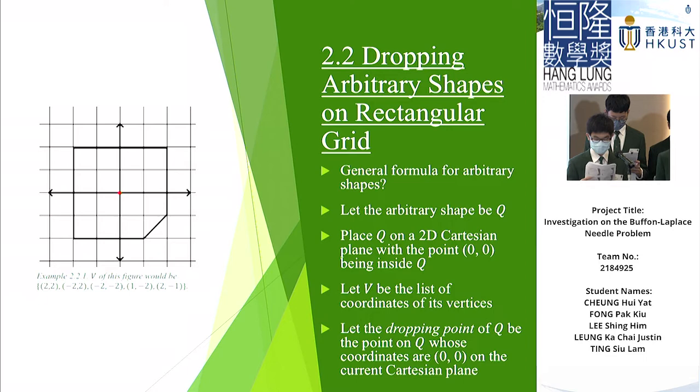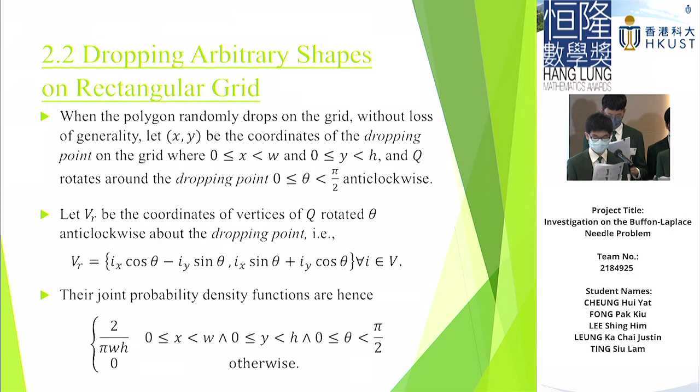Then, let the arbitrary shape be Q. When Q is dropped randomly onto the grid without loss of generality, let x, y be the coordinates of the dropping point on the grid, where x, y, and theta belong to these ranges. Then, let V_θ be the coordinates of vertices of Q rotated theta degrees about the dropping point. And the V_θ is equal to this set of items. And the joint probability density functions are hence this formula.